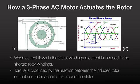Torque is induced in the rotor by the reaction between the induced rotor current and the rotating magnetic flux. If an iron rod is suspended freely in a magnetic field, it will align itself with the field. If that field is rotating, the iron will rotate with the field. In an AC induction motor, the rotor is analogous to the iron rod.